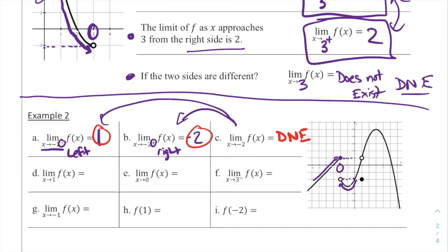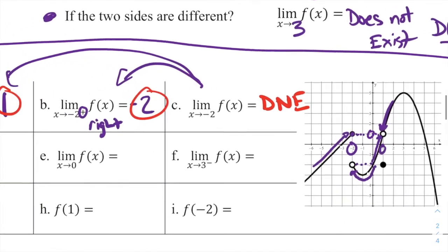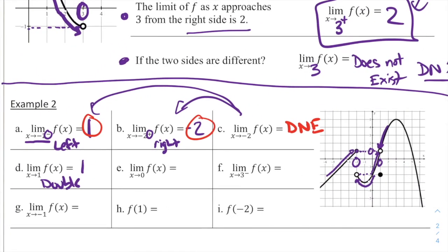For part D: the limit as x approaches 1 of f of x — there's no sign, so this is a double-sided limit. Looking at x equals 1 on the graph, if we follow the function towards x equals 1 from the left side and from the right side, both sides go to the same value, which has a height of 1. So 1 is my limit for D — both the left and the right side are going to y equals 1 when x approaches 1.